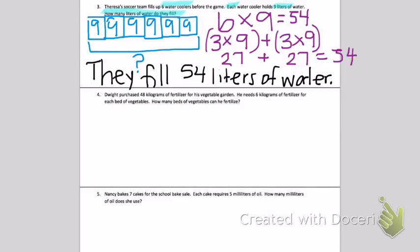Number 4. Dwight purchased 48 kilograms of fertilizer for his vegetable garden. He needs 6 kilograms of fertilizer for each bed of vegetables. How many beds of vegetables can he fertilize?